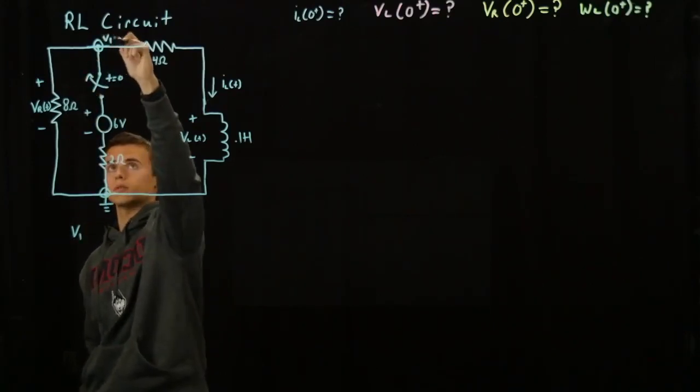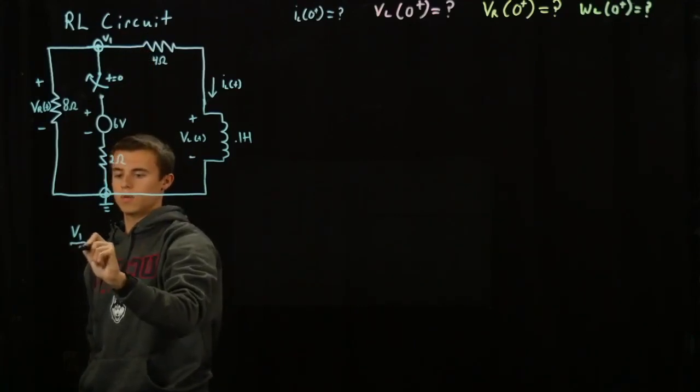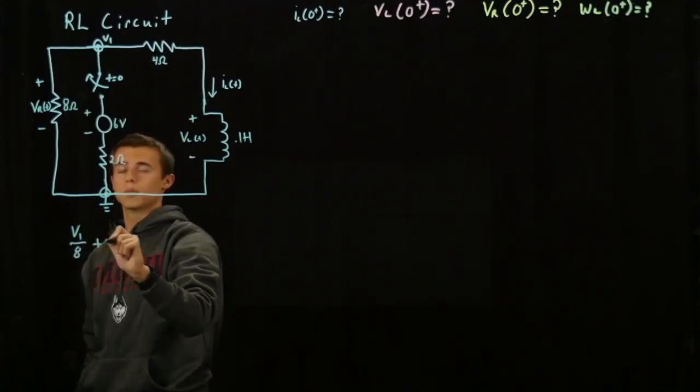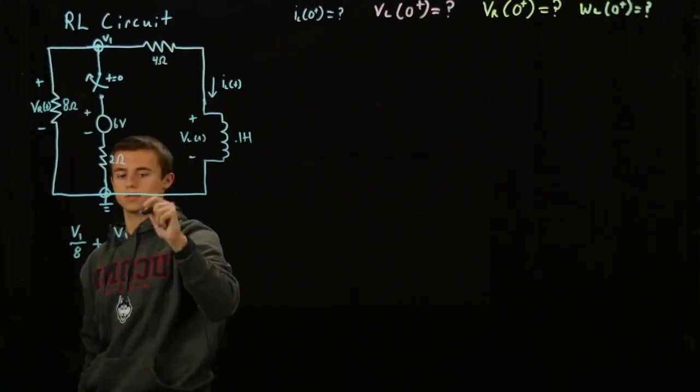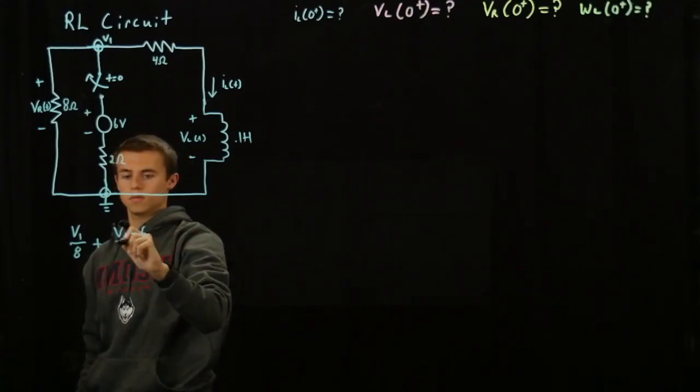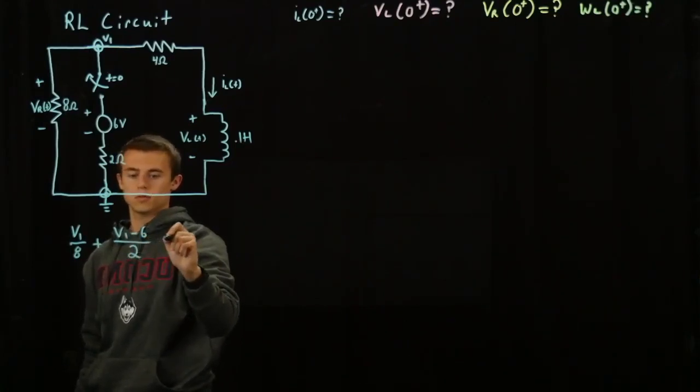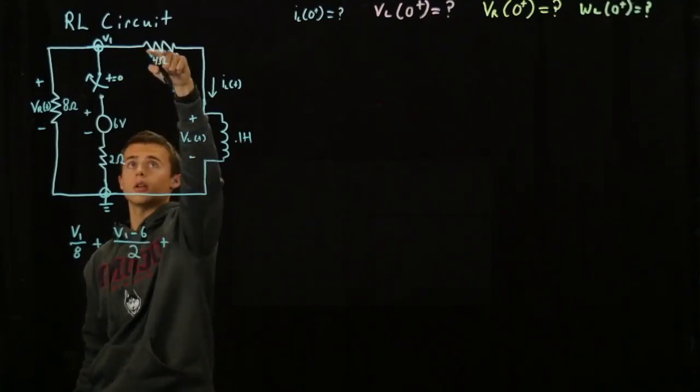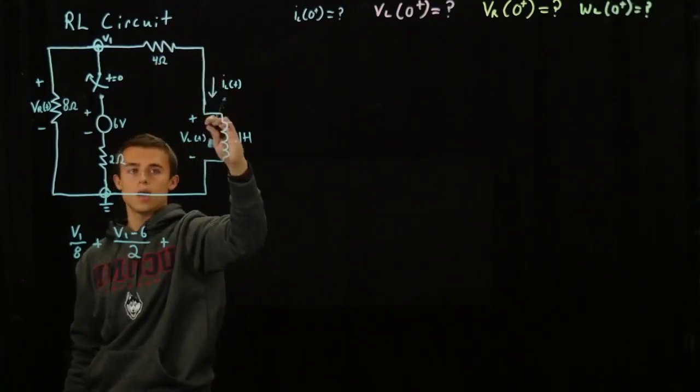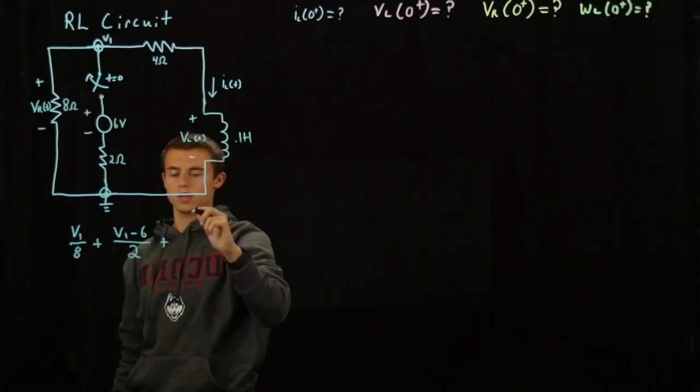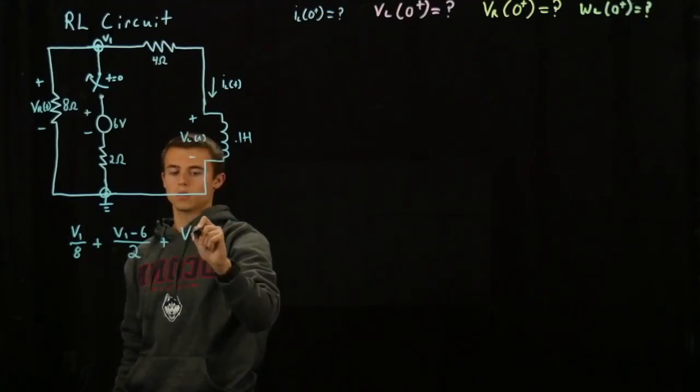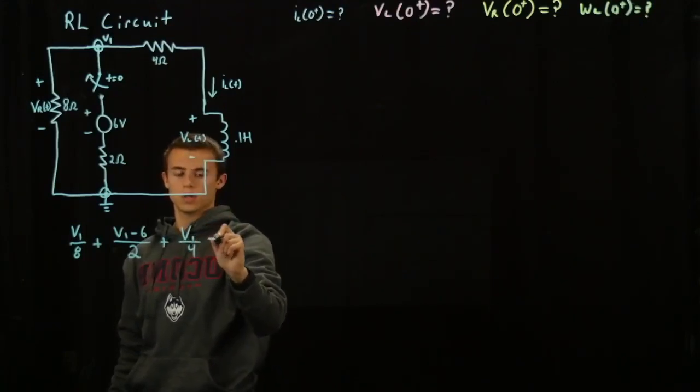This being V1 over 8 ohms plus V1 minus 6 over the 2 ohm resistor plus V1 over 4 ohms. And remember this is acting as a short, a straight line, so we can ignore the inductor. V1 over 4 equals 0.